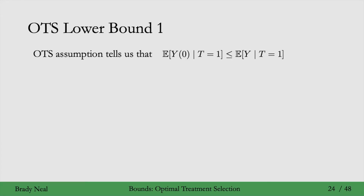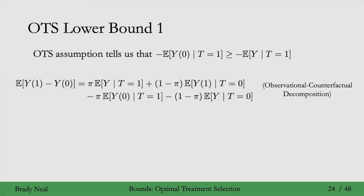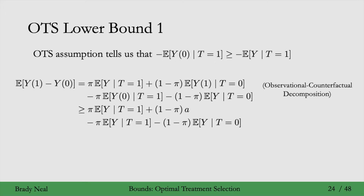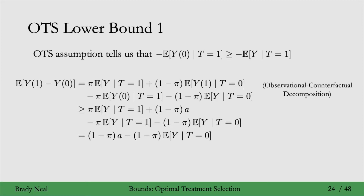Similarly, for the lower bound, we take the other inequality and multiply both sides by negative 1 to flip it. This gives us a lower bound on the term with the negative sign. Plugging that in, and also lower bounding the counterfactual with A as in the no assumptions lower bound, the first and third terms cancel, leaving us with the OTS lower bound.